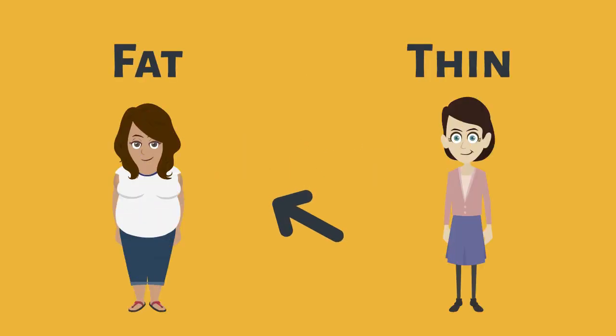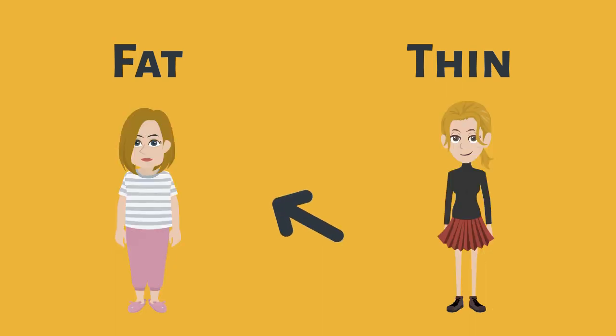For example, this woman is fat. This woman is thin. This girl is fat. And this girl is thin.